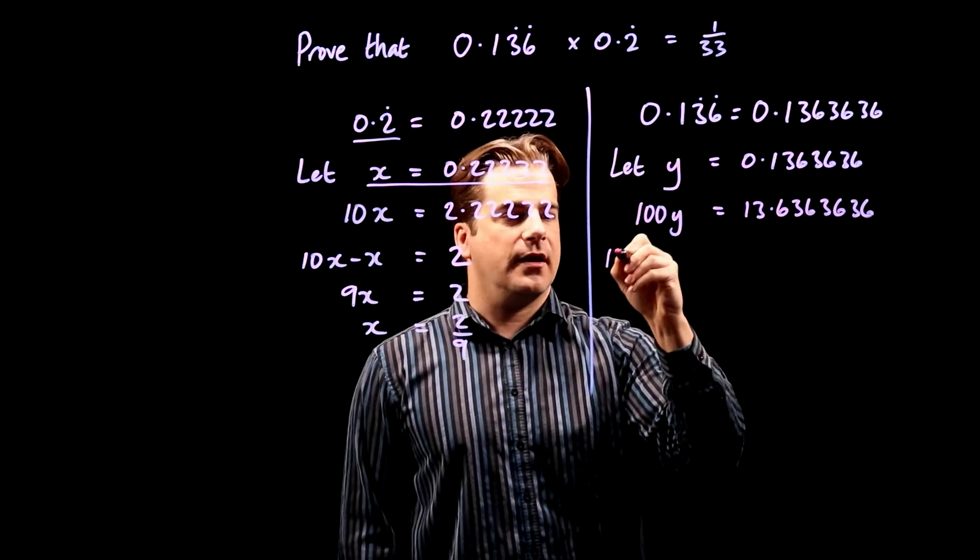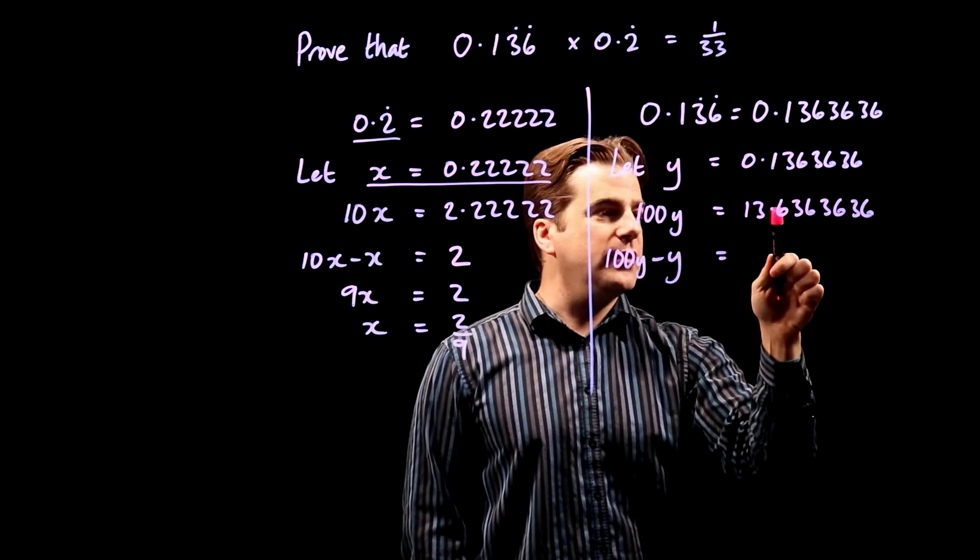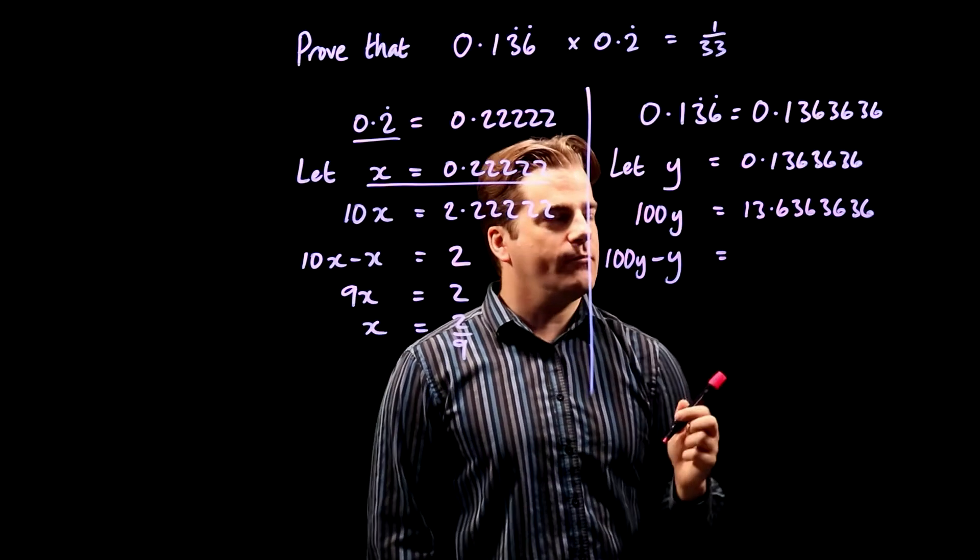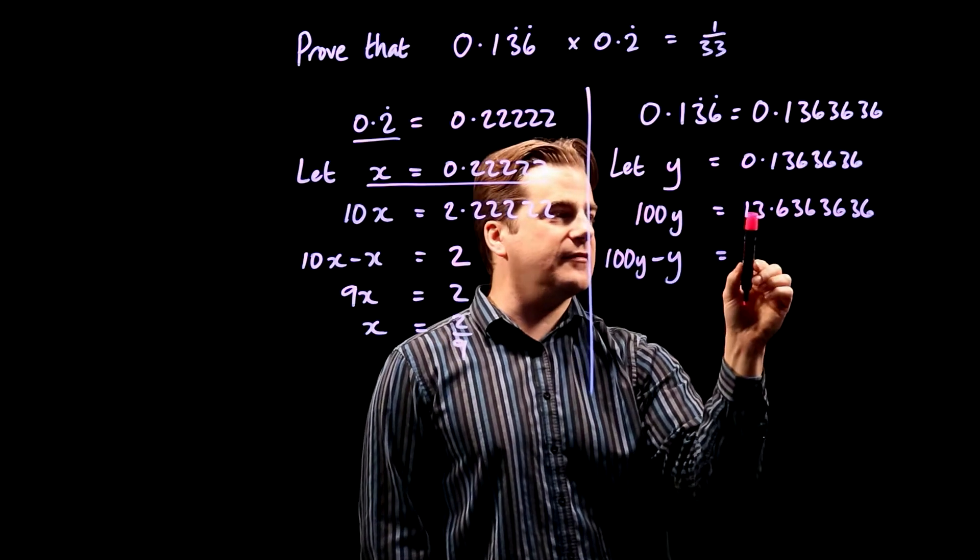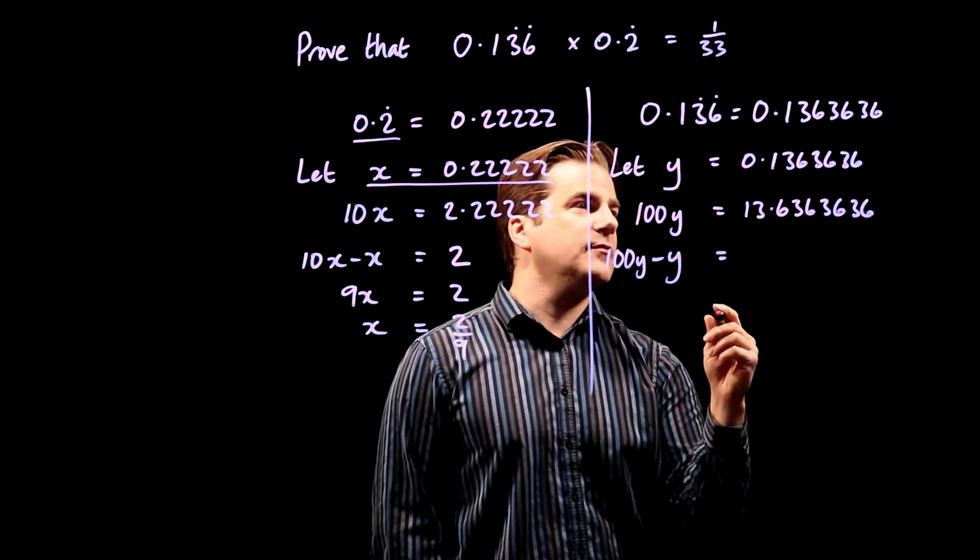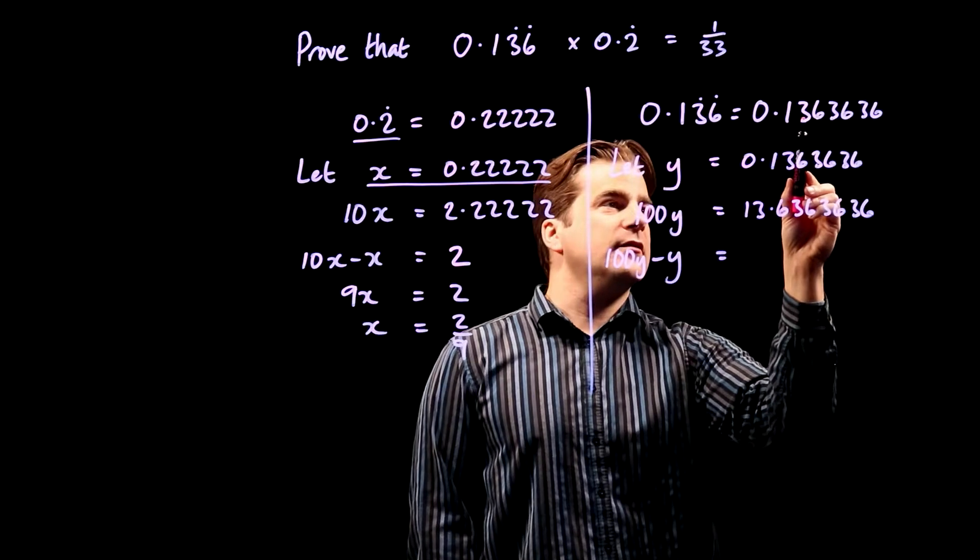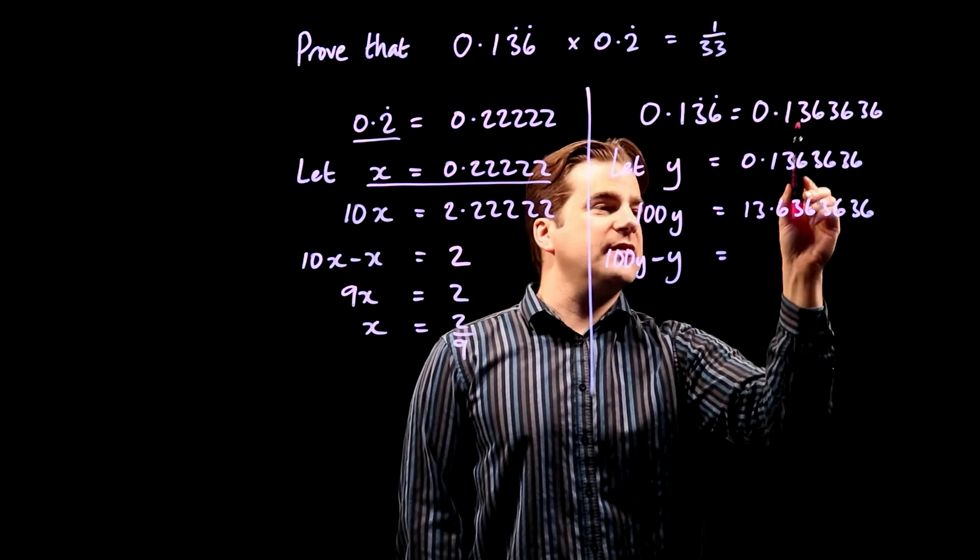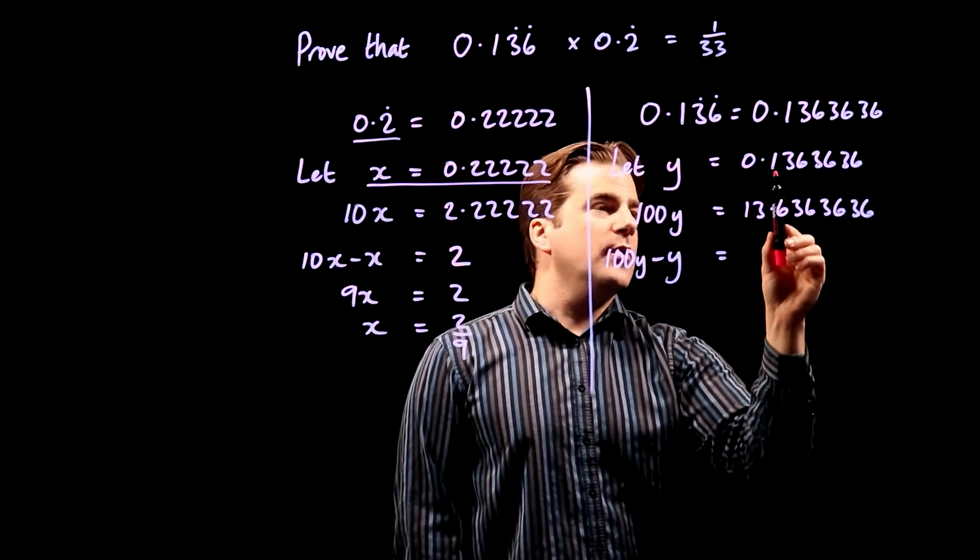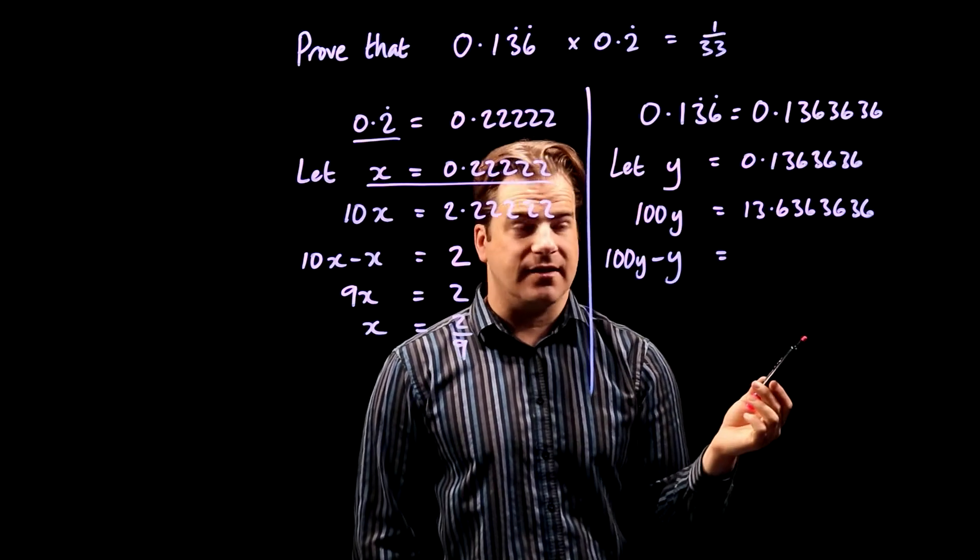Same thing again, we subtract. So we get 100y minus y is equal to, so 13.6 and then the repeating, the repeating begins there, doesn't it? It's 36. It's 36363636. We multiply by 100 because we wanted to get the 3 there. It goes 363636. We wanted it at that position after the decimal, at the second position after the decimal. If we'd only multiplied by 10, we would have a 6 there. And then if we subtracted it, it wouldn't nicely cancel.